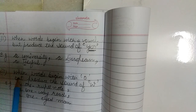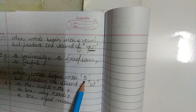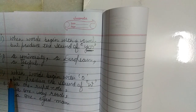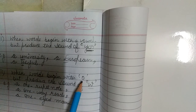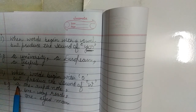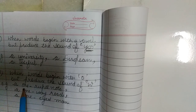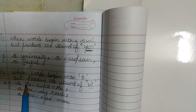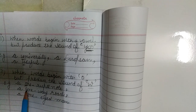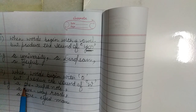The third rule is: when words begin with O which is a vowel but produces a sound of 'W' as in 'one'. For example, 'a one rupee note' — the word 'one' starts with the letter O, which is a vowel, but it produces the sound 'W'. Similarly: 'a one-way road' and 'a one-eyed man'. So these words start with a vowel but produce a consonant sound.